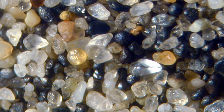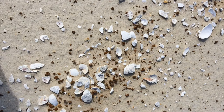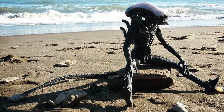Sediment forms from a variety of sources. Lithogenous sediment forms from the breakdown of igneous, sedimentary, and metamorphic rock. Biogenous sediment forms from the hard, mineralized shells of organisms. Hydrogenous sediment forms from chemical precipitation reactions in water. And cosmogenous sediment forms from material brought to Earth from outer space.